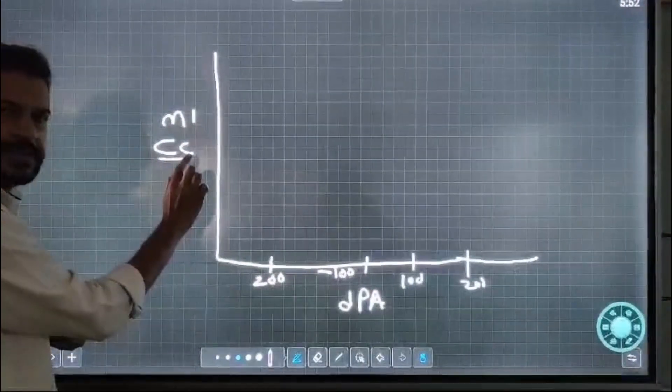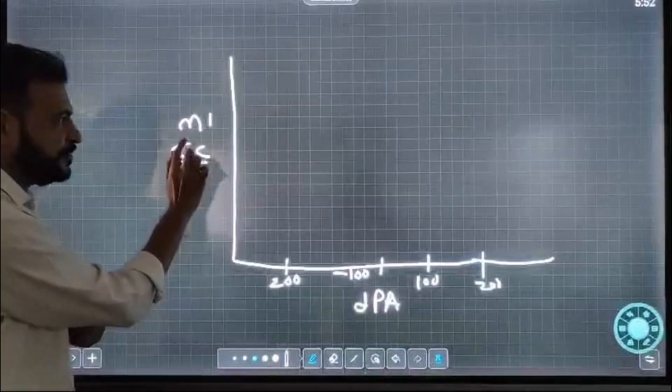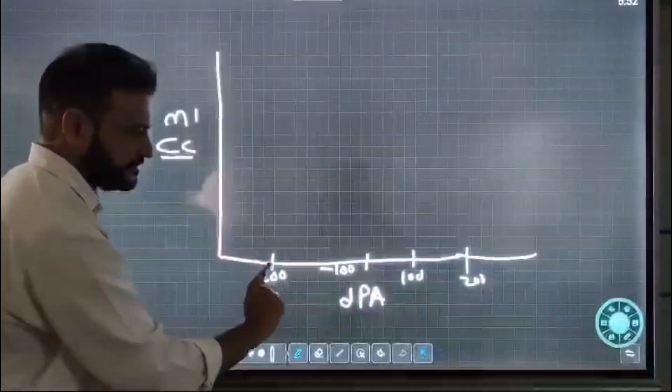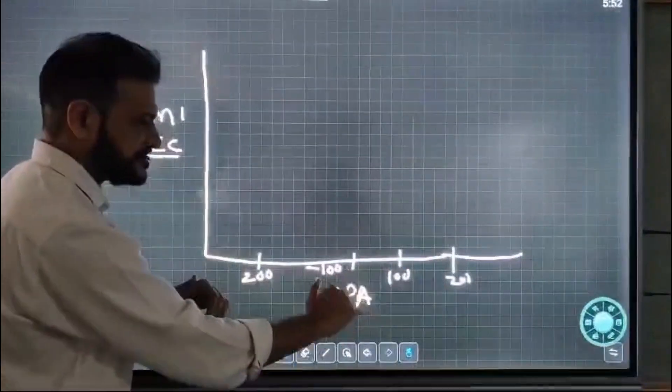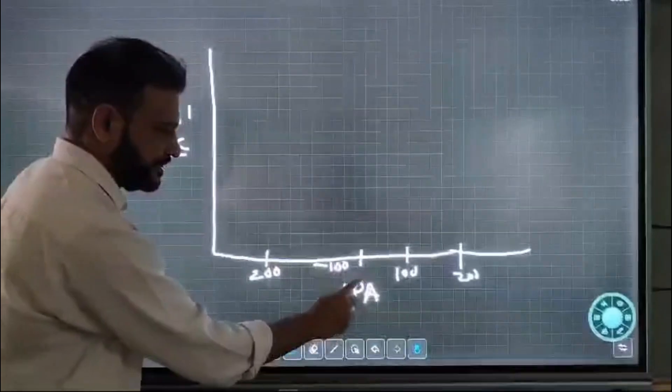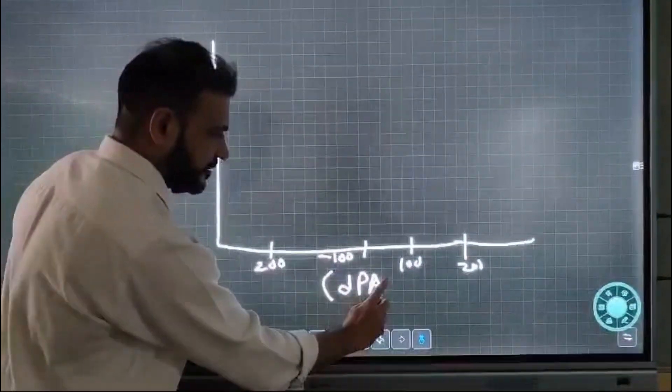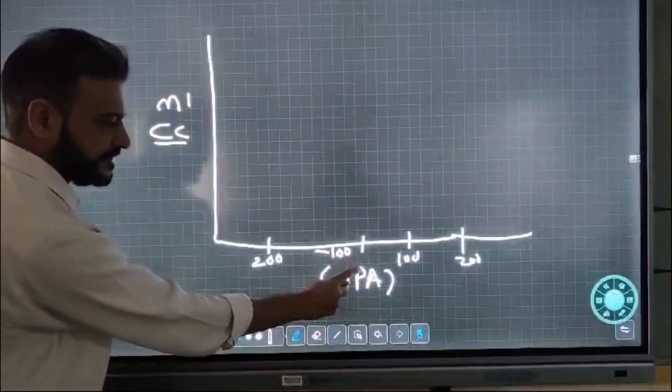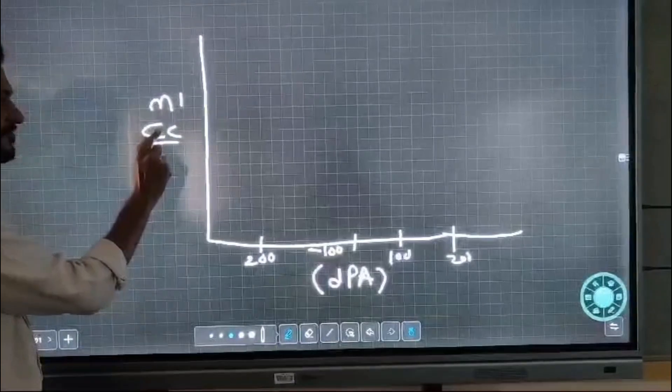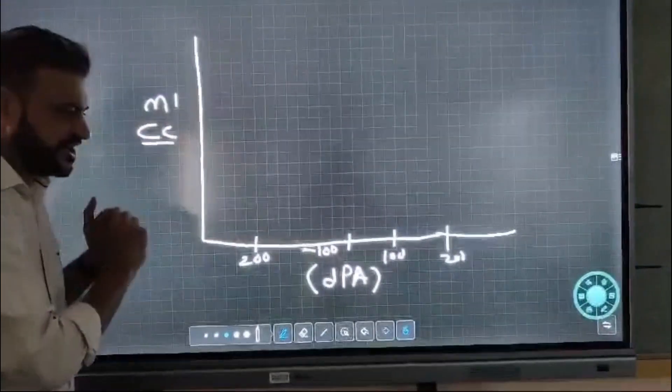The Y-axis measures compliance, which is measured in CC or ML. The X-axis measures the pressure at which compliance is taken, with units in decapascals. So decapascals for pressure and CC for compliance.